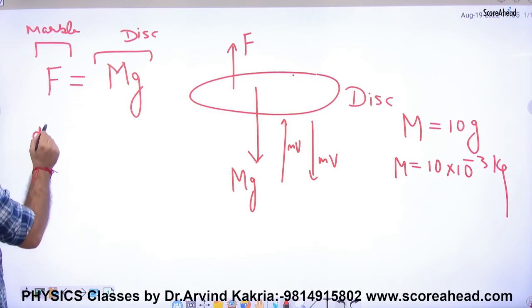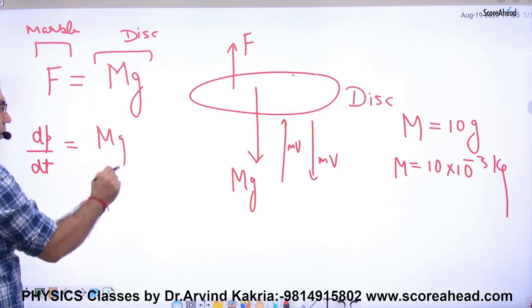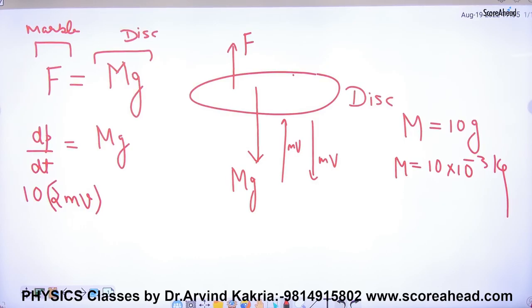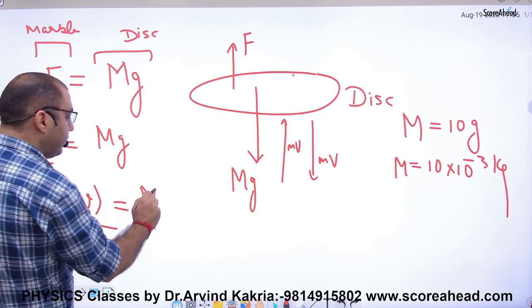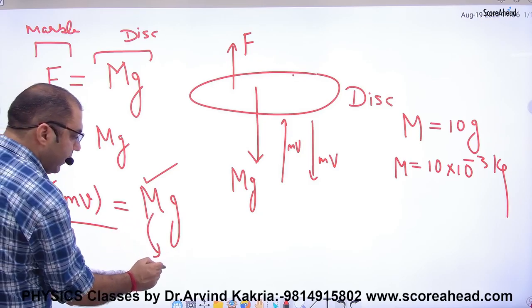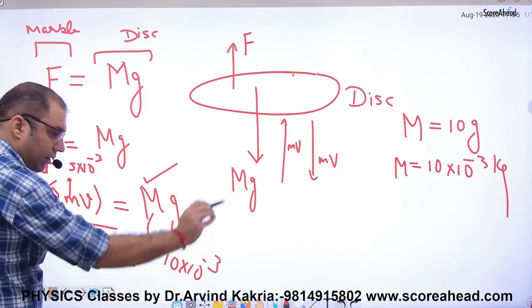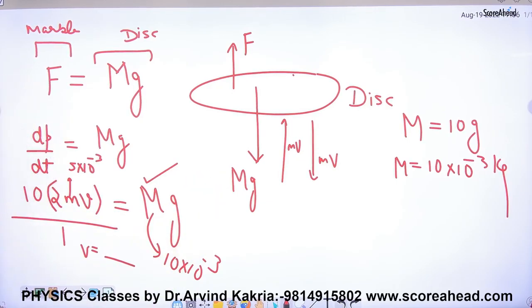Marble's force equals weight of disk. This is the disk's weight, and this equation is for the marble. Force equals rate of change of momentum equals disk's weight. Change in momentum of the bullet is 2mv. One marble went and came back, 2mv. How many bullets went in one second? 10. So total momentum for 10 bullets is 10 × 2mv. These 10 bullets have kept it held. Divided by time—10 marbles in how much time? One second. So time is 1 second. This equals mass of disk times g. Mass of disk given is 10 grams, mass of bullet is 5 grams. Solving this, v can be calculated.